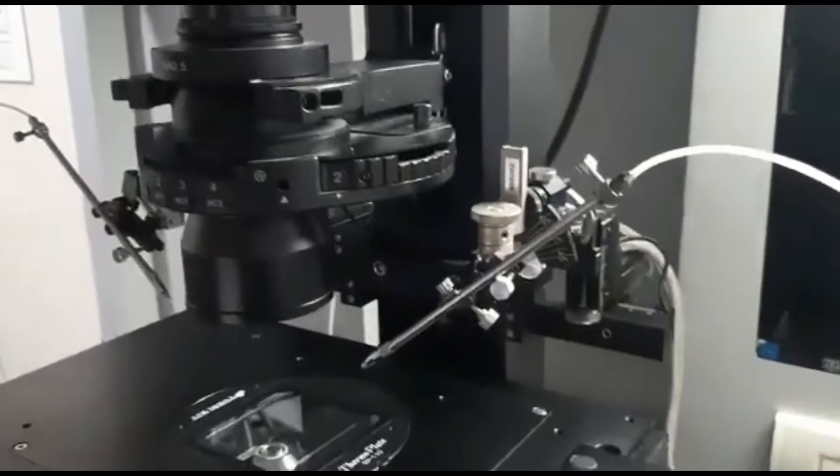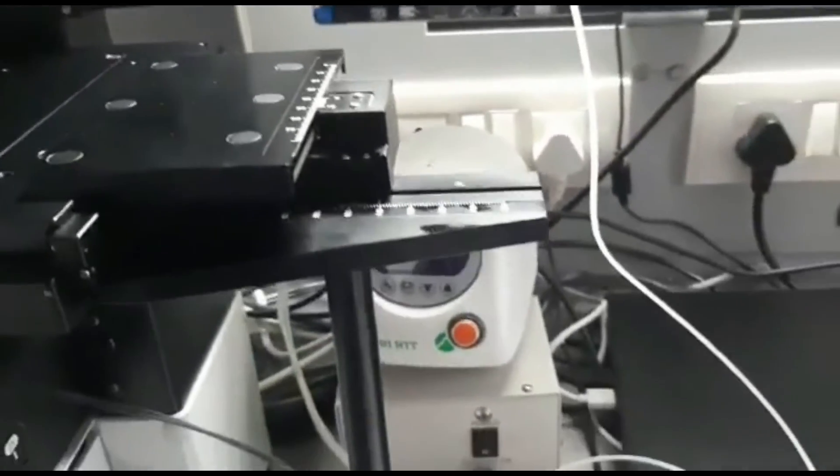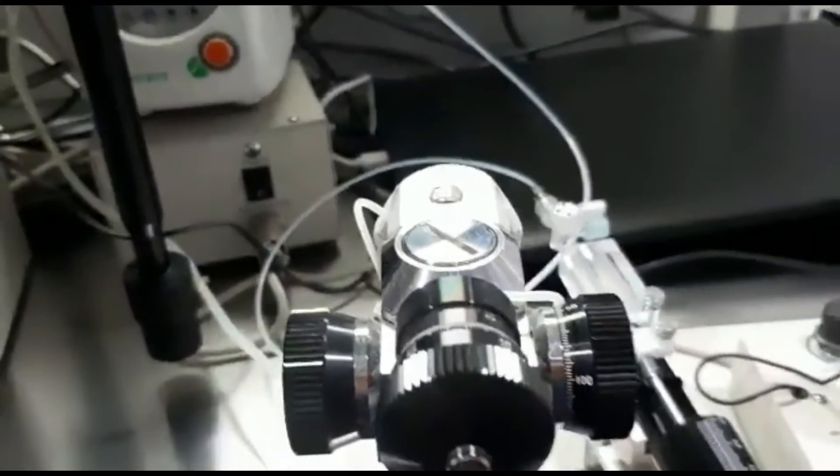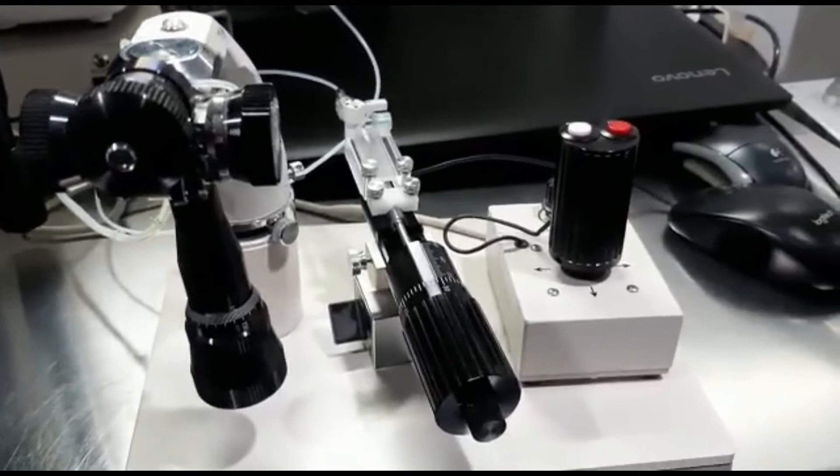Optional Differential Interference Contrast, or DIC, observation units enable researchers to use intracytoplasmic morphologically selected sperm injection, or IMSI, to confirm the shape, size, and number of vacuoles in the head of the sperm.